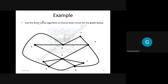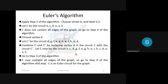Let me explain with a problem. This graph is given and you are asked to find the Euler circuit. As per the algorithm, the first step is to choose a vertex. I am choosing B and labeling it as V. Starting from B, I go B→C→D→E→A and then return to V, but I realize I have many other unexplored edges remaining.